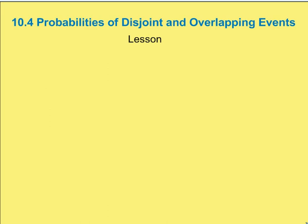In this lesson, we're going to talk about the probabilities of disjoint and overlapping events. There are a couple things that we need to know before we come up with a formula for overlapping events and the probabilities.